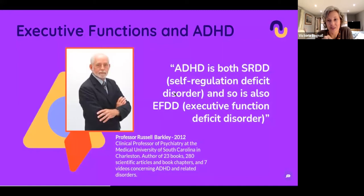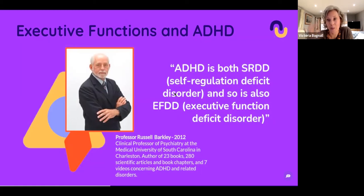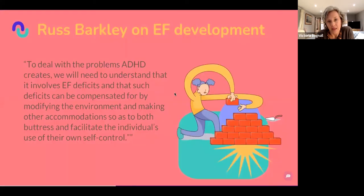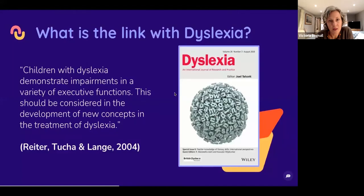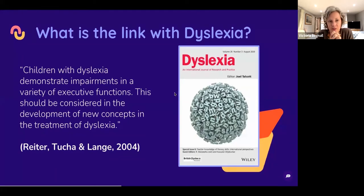There's lots of research around executive functioning and neurodiversity. Professor Russell Barkley is the foremost researcher in the ADHD and EF field — about ten years ago he published a paper saying ADHD is also self-regulation deficit disorder and executive function deficit disorder — it's all about the prefrontal cortex. He talked about how we can develop our executive functions by modifying the environment and making accommodations. There's also a strong link with dyslexia too, which is important because neurodiverse conditions don't exist in silos — there's always lots of other things going on.